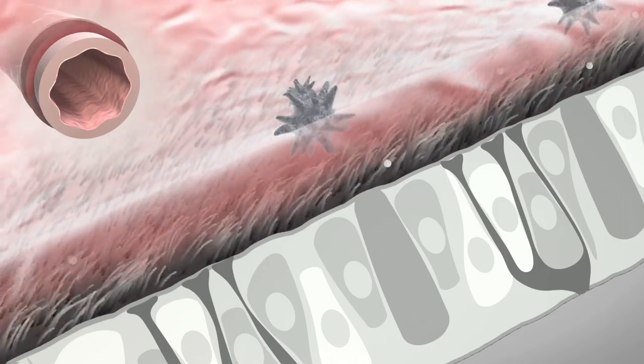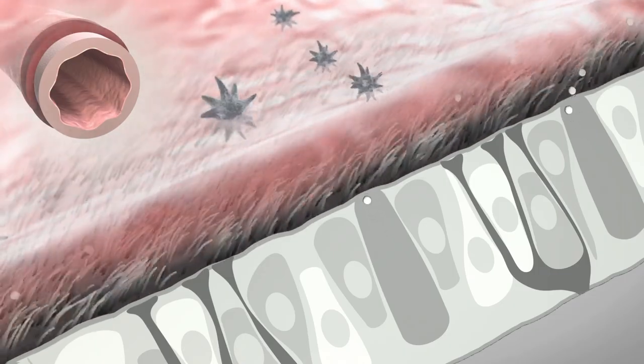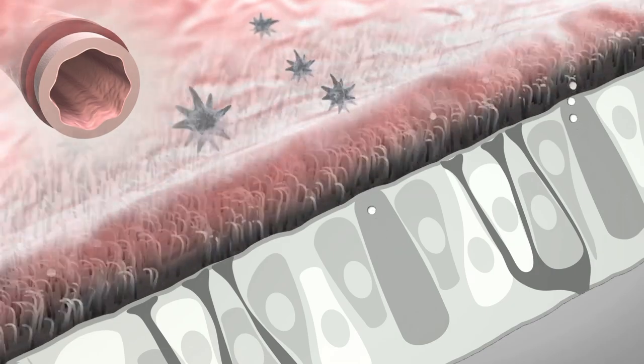Before pathogens compose a risk to the body, hair-like projections called cilia transport the foreign bodies towards the mouth.